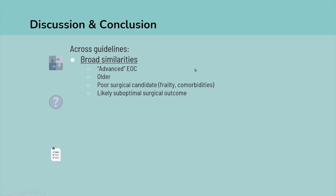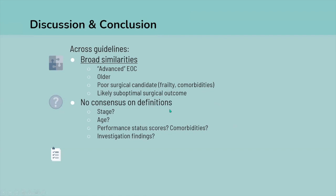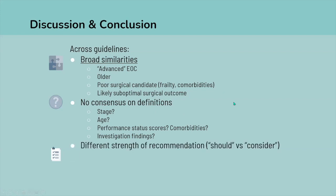Across guidelines there are broad similarities — patients who should receive chemotherapy first tend to be those with advanced epithelial disease who are older, poor surgical candidates due to frailty or comorbidities, and likely to have suboptimal surgical outcomes. However, there is no consensus on objective definitions: what stage constitutes 'advanced,' what age cutoff for 'older,' what performance status scores indicate too frail, which specific comorbidities apply, and what investigation findings suggest likely suboptimal surgical outcomes. There are also different strengths of recommendation across guidelines.